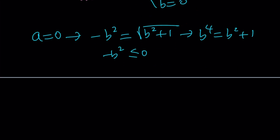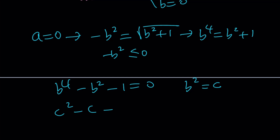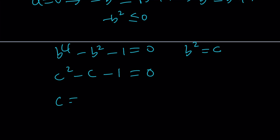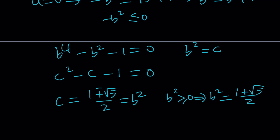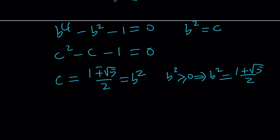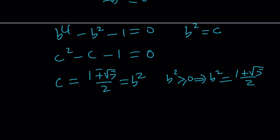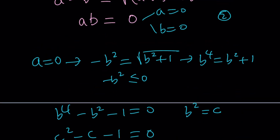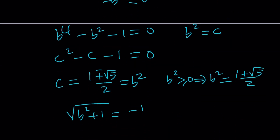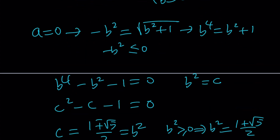Negative B squared is always less than or equal to zero, which can't equal the radical since B is real. You can also square both sides to get B to the fourth equals B squared plus 1, set B squared equal to C, and get C squared minus C minus 1 equals zero. The quadratic formula gives C equals (1 ± √5)/2. Since B squared must be non-negative, we'd need B squared equals (1+√5)/2, but then the square root of B squared plus 1 would need to equal a negative number — impossible. So A equals zero gives no solutions.